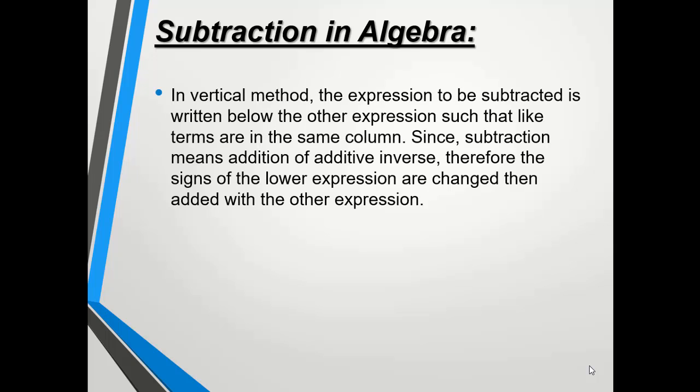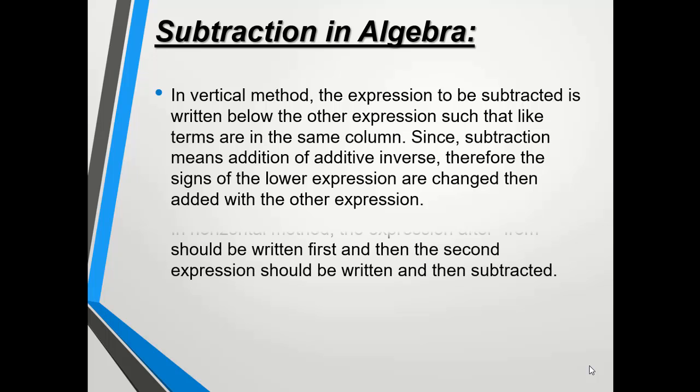In the vertical method, the expression to be subtracted is written below the other expression such that like terms are in the same column. Since subtraction means addition of the additive inverse, the signs of the lower expression are changed and then added with the other expression.